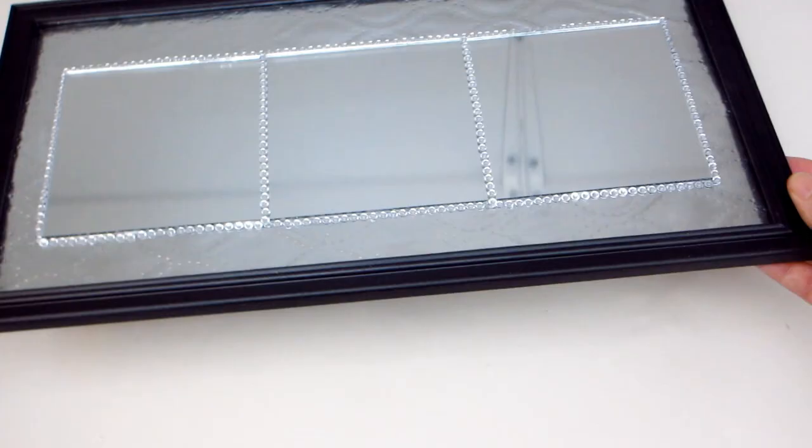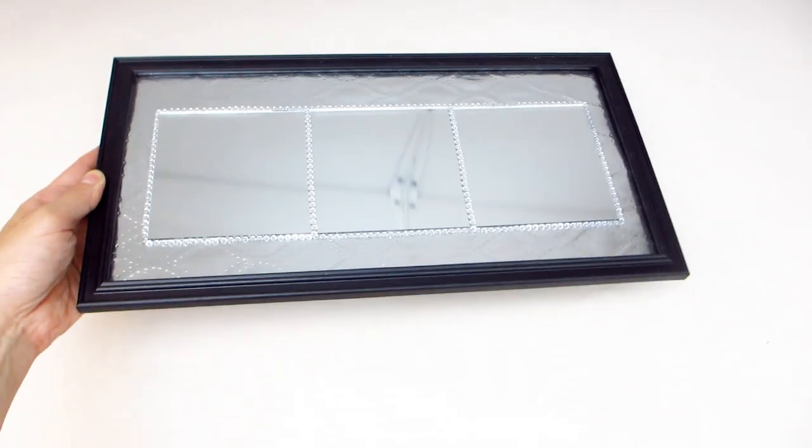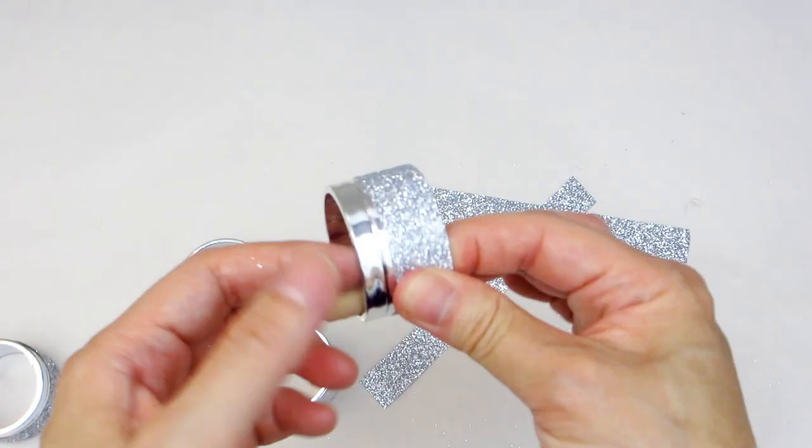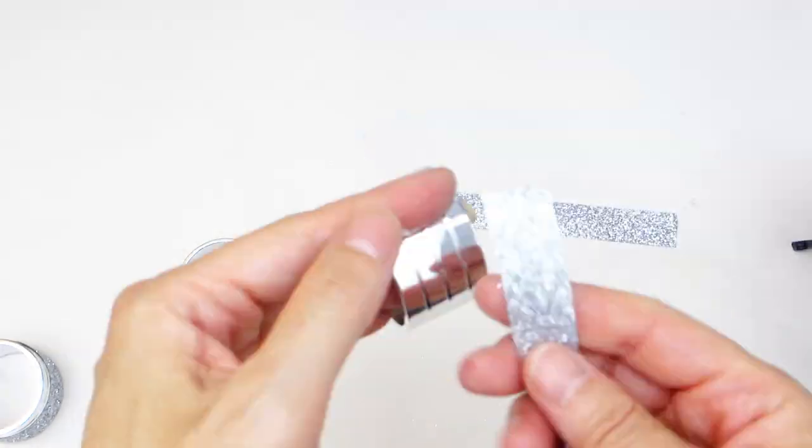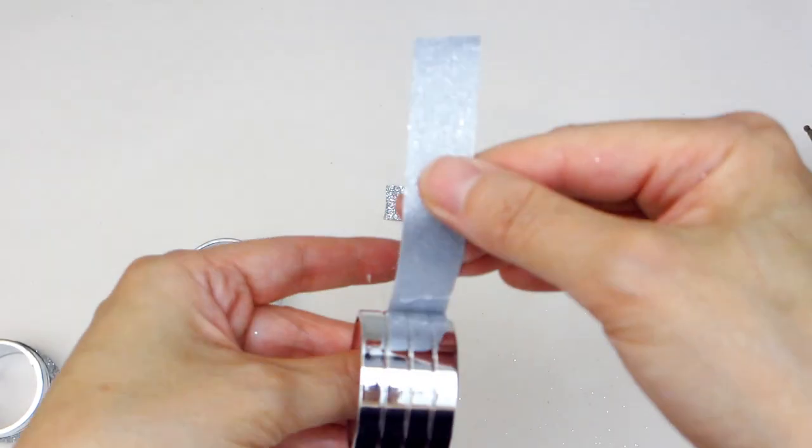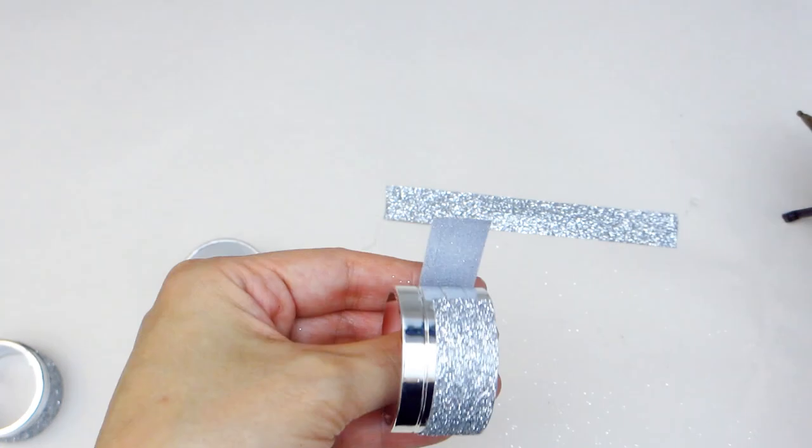Our next step is to build some legs for the tray to give it a bit of height. For this, we will be wrapping these four napkin rings in glitter ribbon. A single strip of ribbon per napkin ring will suffice.